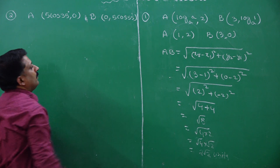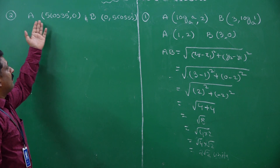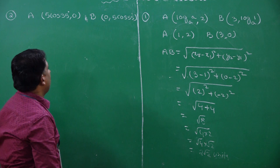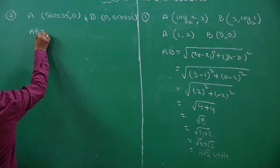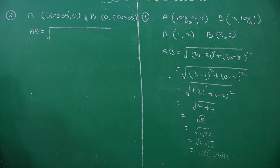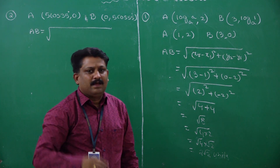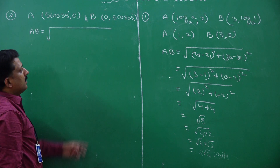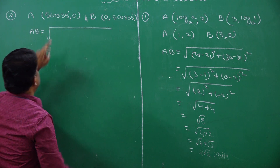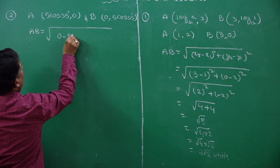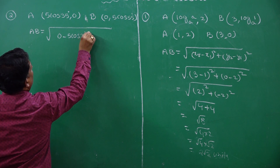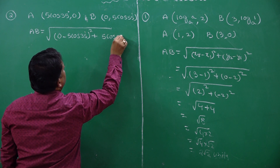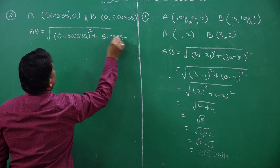Here I need to find out the distance between these two points: A(5 cos 35 degrees, 0) and B(0, 5 cos 55 degrees). Using the same formula AB = root of (x2 minus x1) whole square plus (y2 minus y1) whole square, where A is (x1, y1) and B is (x2, y2). So: (0 minus 5 cos 35 degrees) whole square plus (5 cos 55 degrees minus 0) whole square.